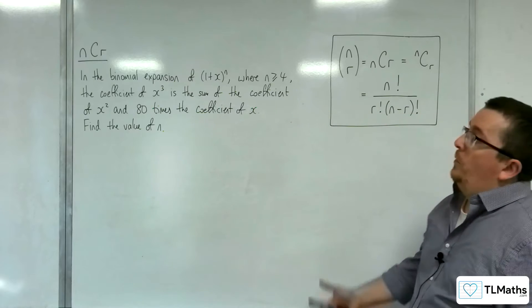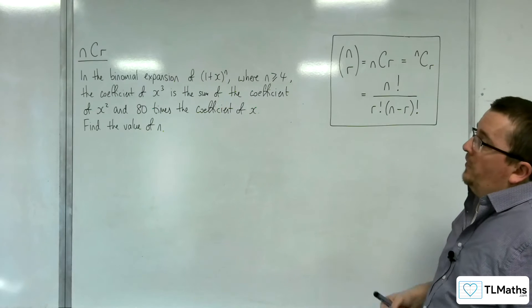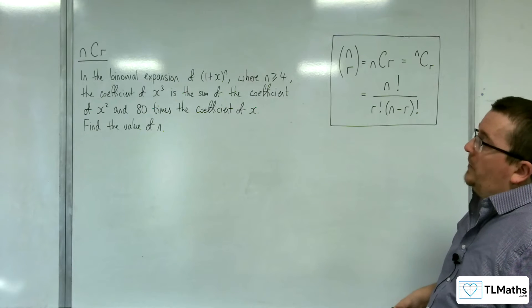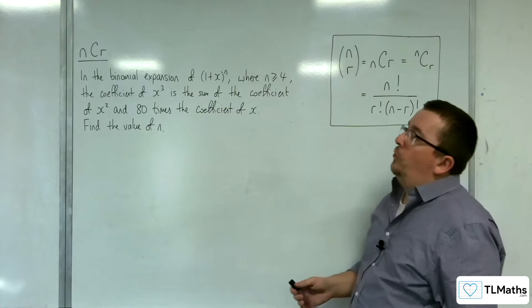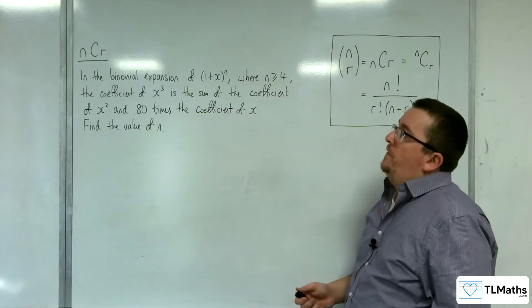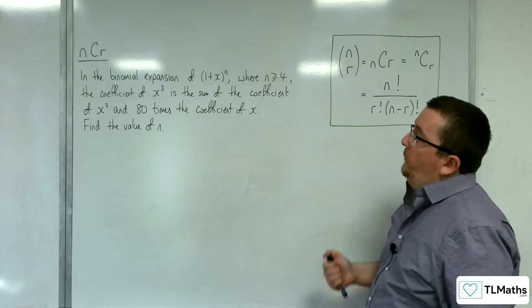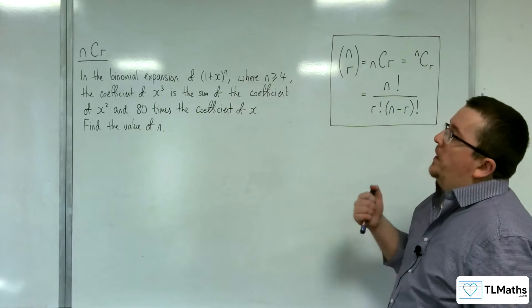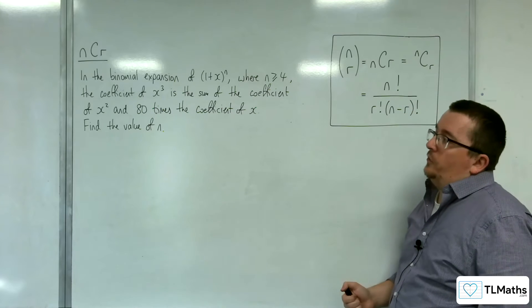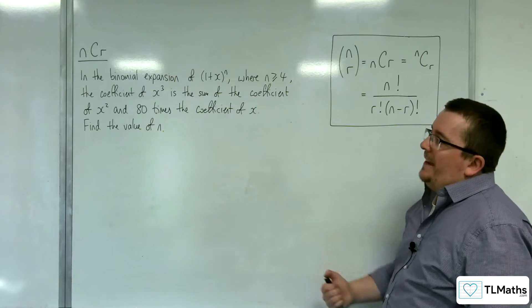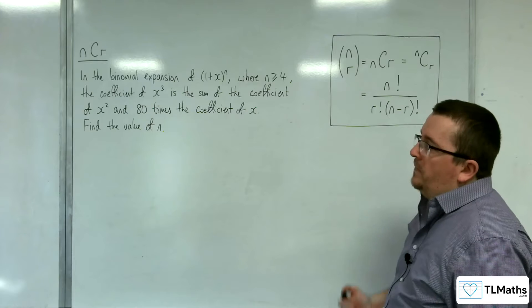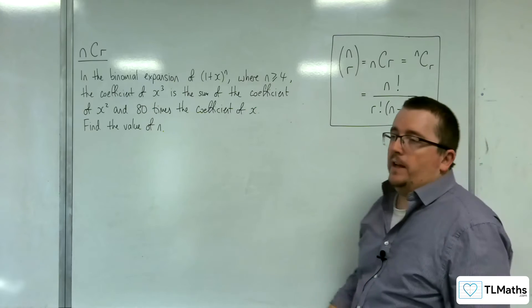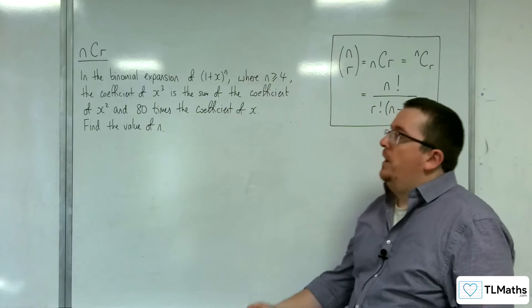In this problem, we've got the binomial expansion of (1+x)^n, where n is greater than or equal to 4. The coefficient of x cubed is the sum of the coefficient of x squared and 80 times the coefficient of x. Find the value of n.